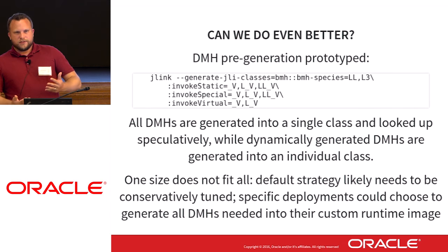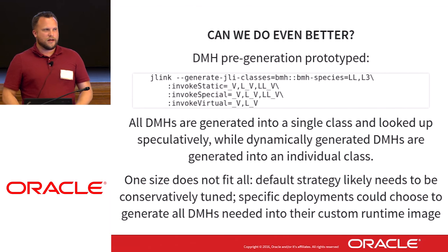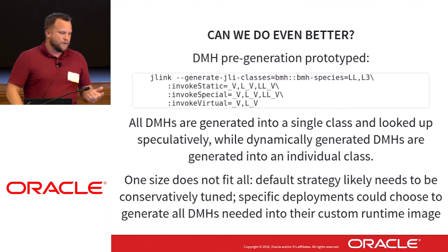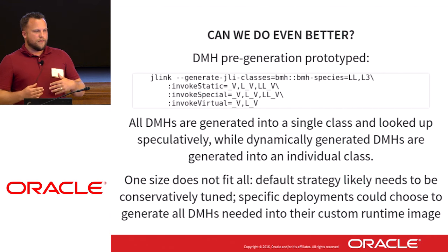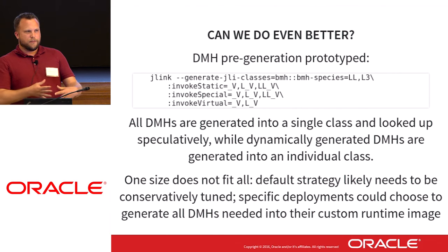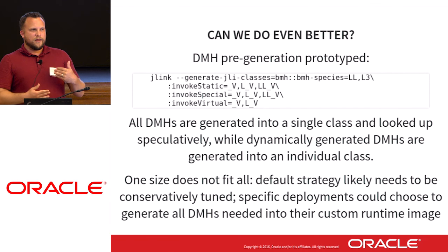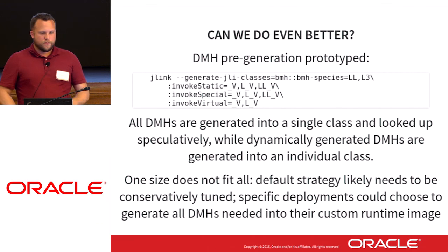This gets complicated because you need to know what methods will be used, and if you just overload the classes that you're generating ahead of time, you might run into other problems. The default strategy probably needs to be conservatively tuned, whereas specific deployments — like a language runtime — will have the freedom to tune the number and type of classes to generate ahead of time, which kind of solves the problem of having a rather plastic optimization target for what parts of the implementation to generate ahead of time.